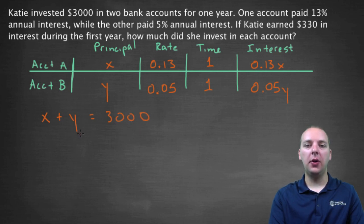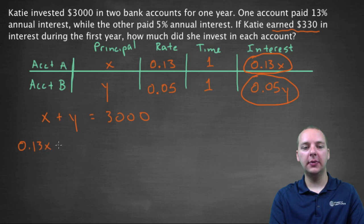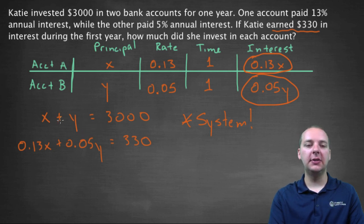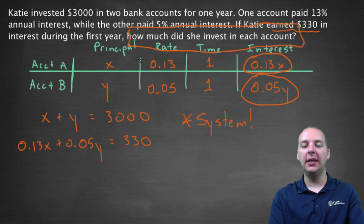And then we also know that she earned a total of three hundred and thirty dollars in interest. So I think that would be the same as taking the interest from account A and adding it to the interest in account B. So we could say 0.13X plus 0.05Y equals three hundred and thirty dollars. And what we have right here is a system of equations. So if you can solve this system for X and Y, we will know how much she invested in each account.